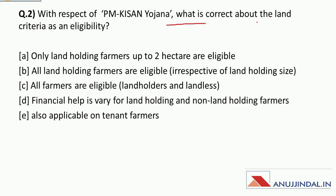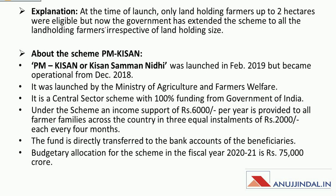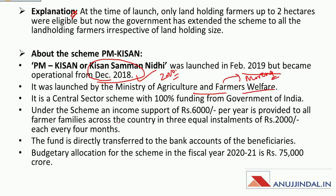Question two: With respect to PM Kisan Yojana, what is correct about the land criteria as an eligibility? PM Kisan Samman Nidhi Yojana was launched in February 2019 but became operational from December 2018, when the first installment of rupees 2000 was given to farmers. This scheme works under the Ministry of Agriculture and Farmers Welfare headed by Narendra Singh Tomar. It is a central sector scheme with 100 percent funding from the Government of India.